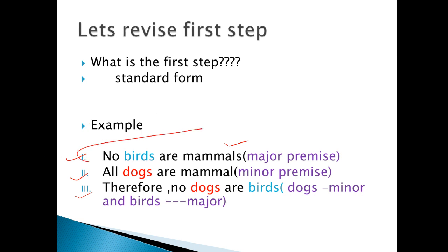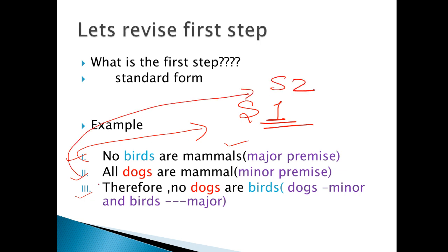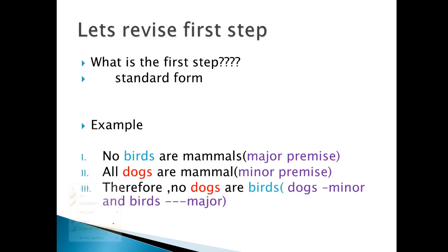Let's understand the first statement. Statement number one, statement number two, and the third is the conclusion. Now let's see what standard form is. In the conclusion 'No dogs are birds,' if you take the first word, let's understand: the first word is our subject.